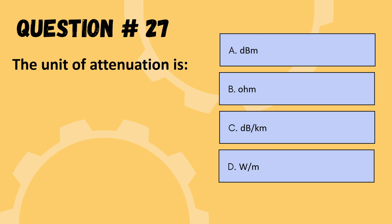Next question: the unit of attenuation is — options are dB/meter, ohm/meter, dB/kilometer, or W/meter. The correct option is C: dB/kilometer.